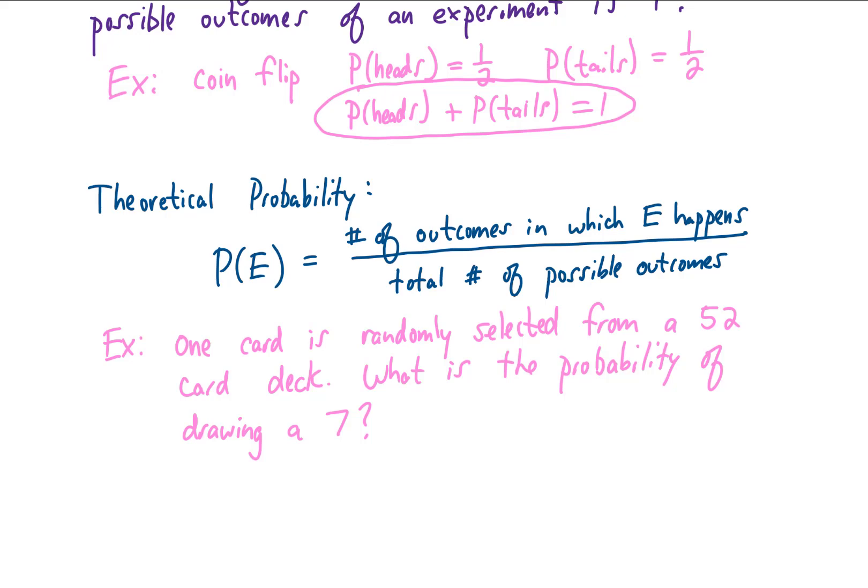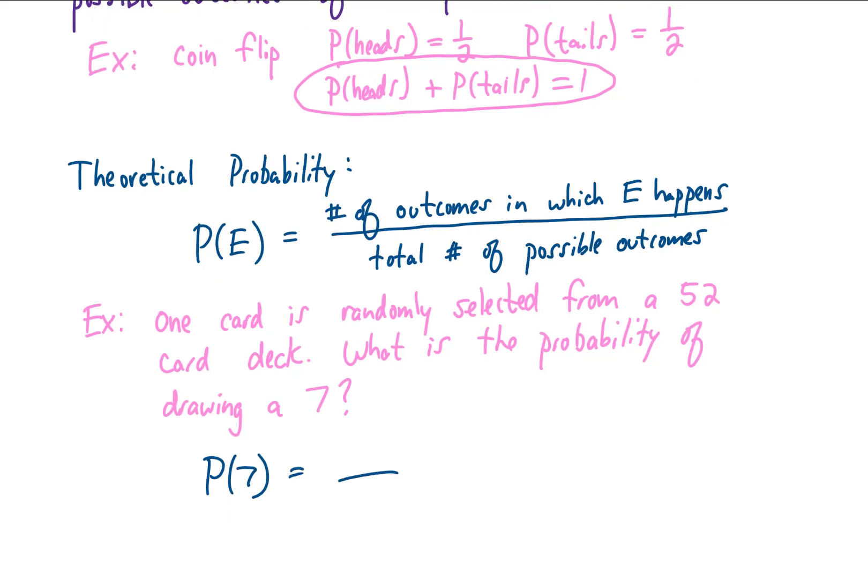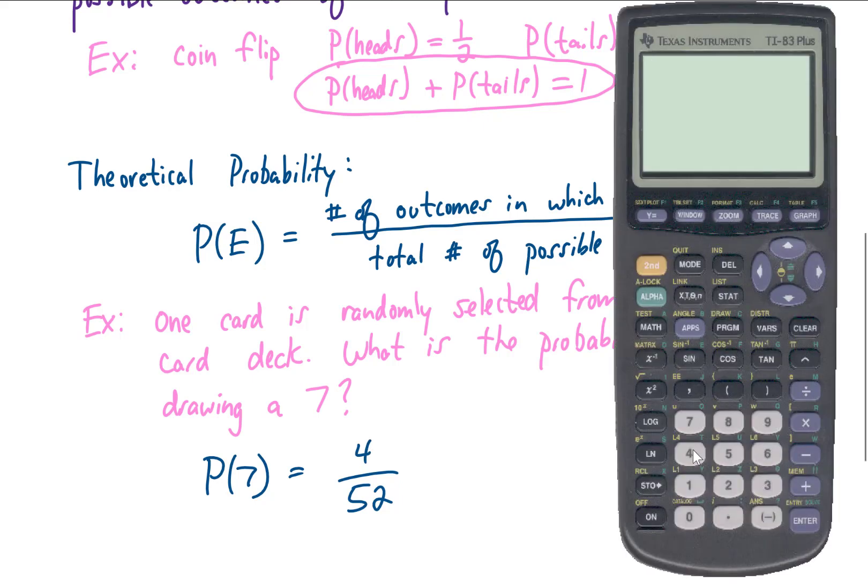One card is randomly selected from a 52-card deck. What is the probability of drawing a 7? So we want to calculate the probability of the event drawing a 7. The total number of possible outcomes for what this card could be is 52, and how many 7s are in the deck? I believe there are 4 sevens in a deck. We could type that 4 over 52 into our calculator. That could give us a decimal of approximately 0.077, which refers to about a 7.7% chance that that event occurs.